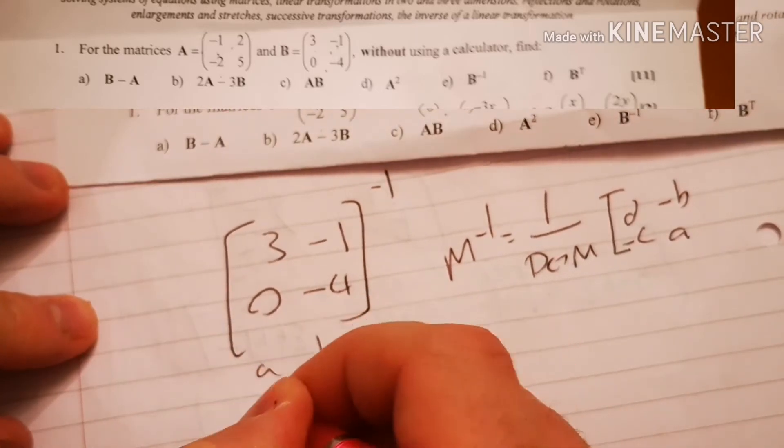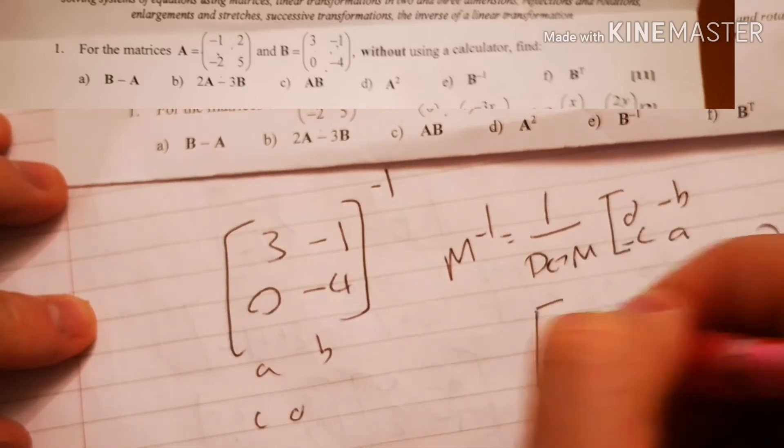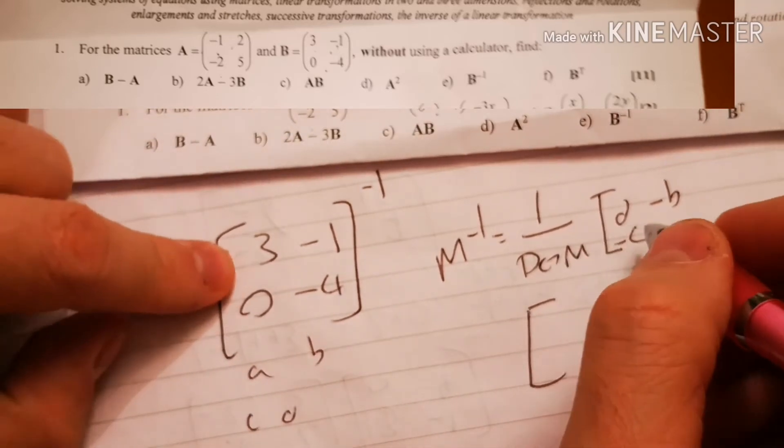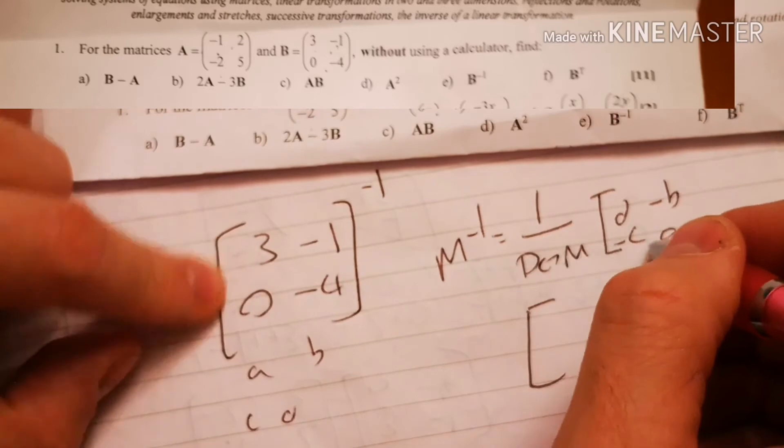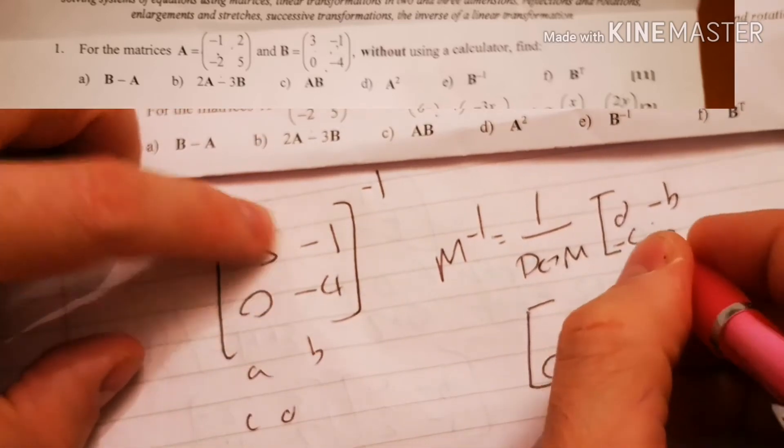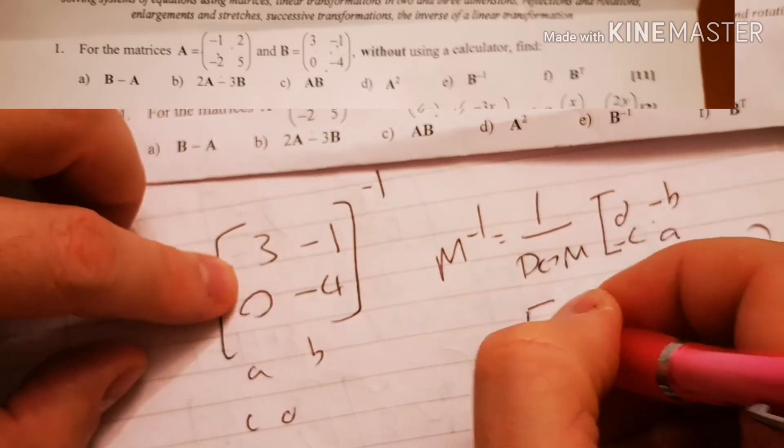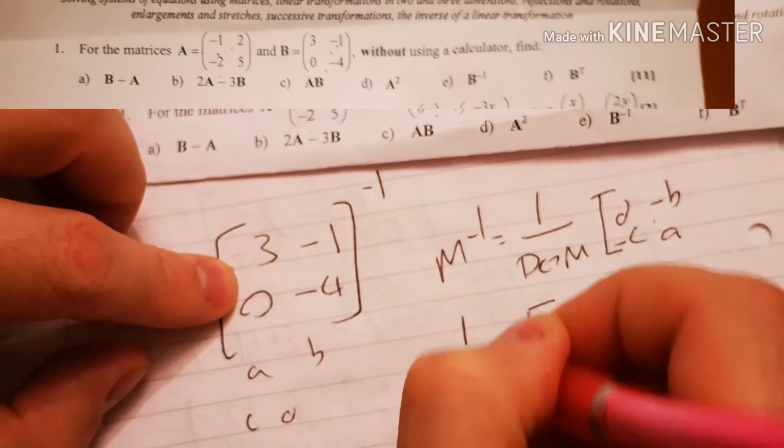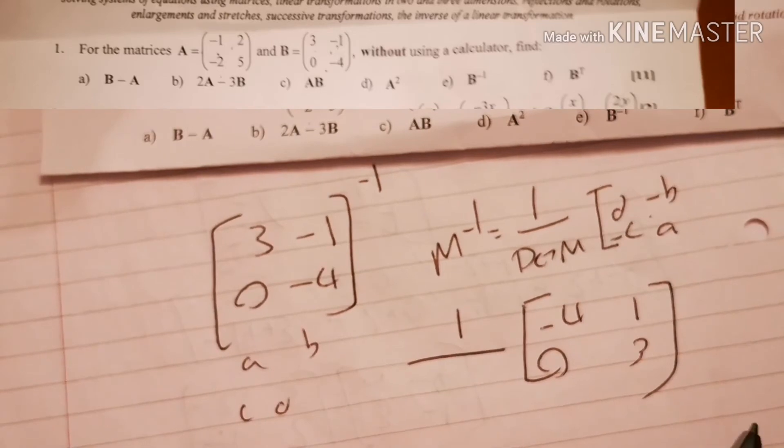I'm assuming this is in the form a, b, c, d. So let's do the last bit first. A is 3. C is 0. So it's still minus 0. B turns into a positive 1. And d is now minus 4. 1 over. Now I've just got to work out my determinant for this matrix.